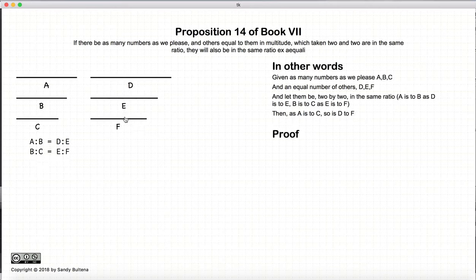So how do we prove this? Let's start with our initial conditions where A to B is equal to D to E, and B to C is equal to E to F. Now, if A to B is equal to D to E, then by Proposition 13, which was just the previous proposition, we know that the ratio of A to D is equal to the ratio of B to E.